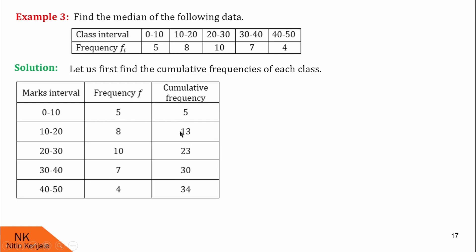For the next class, it will be 8 plus 5 = 13. For the next class, it will be 10 plus 8 plus 5 = 23. For the next class, it is 23 plus 7 = 30. And for the last class, it will be 30 plus 4 = 34. So these are the cumulative frequencies and from this we find the total frequency is 34.